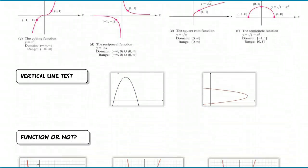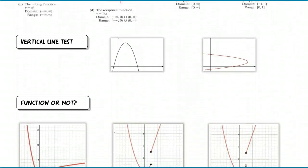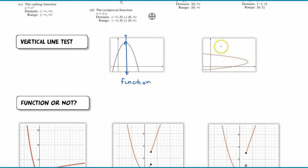Now I'm sure you've heard of the vertical line test. If I create a vertical line anywhere on this graph and it only intersects one time, that means this is a function. In the second example, if I create a vertical line and it passes through the graph twice, this is not a function. This would be a relation, but it's not a function.